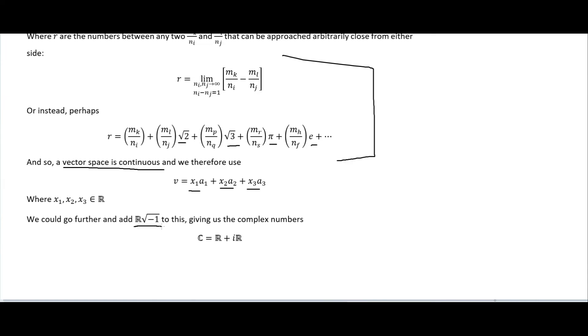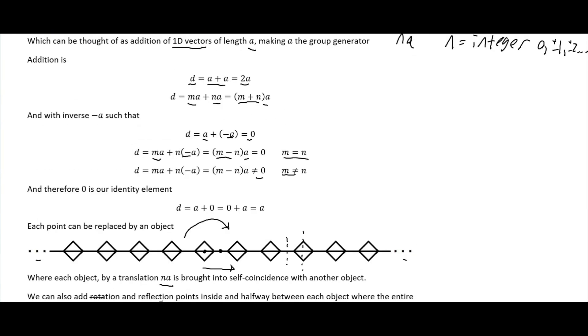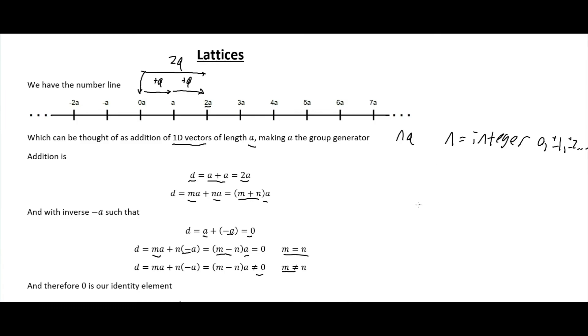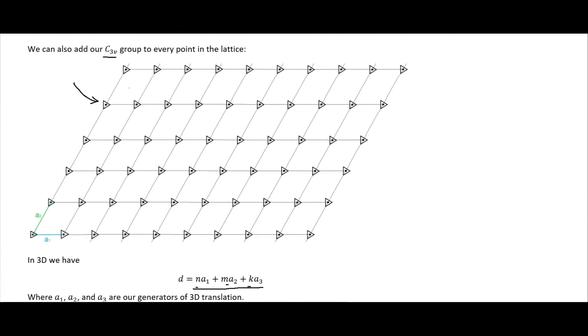We could even go further and add the real numbers times the square root of negative one, which is the imaginary number, so we could get the complex numbers as well which just expands our field of numbers quite considerably. This was showing how we use these lattices which form a group and we can just sort of expand on them until we get up to a vector space.